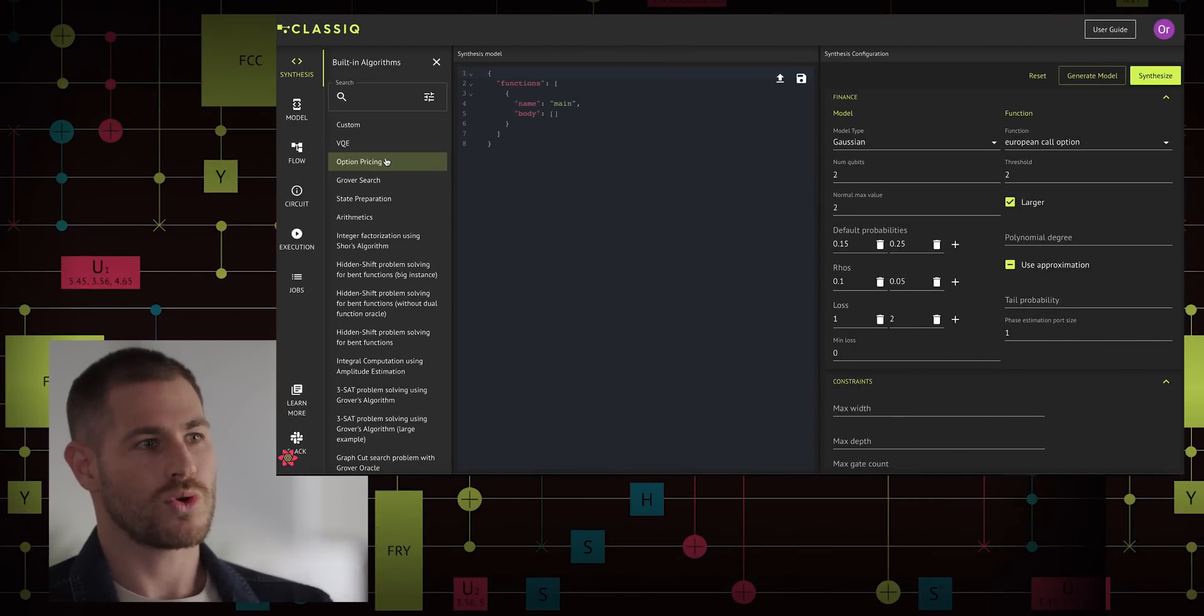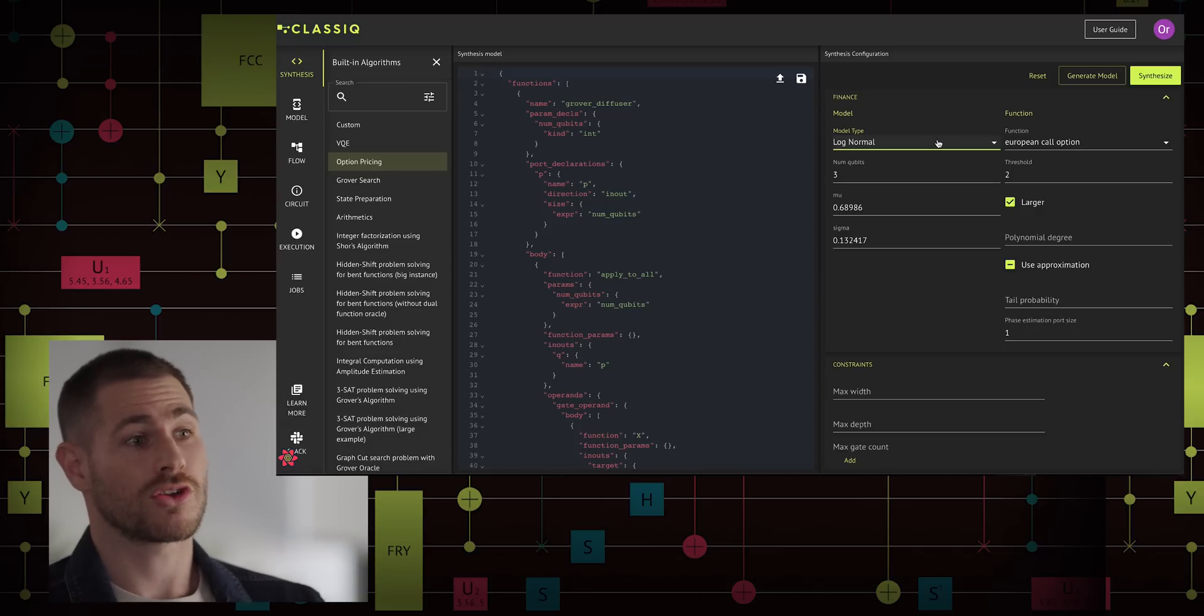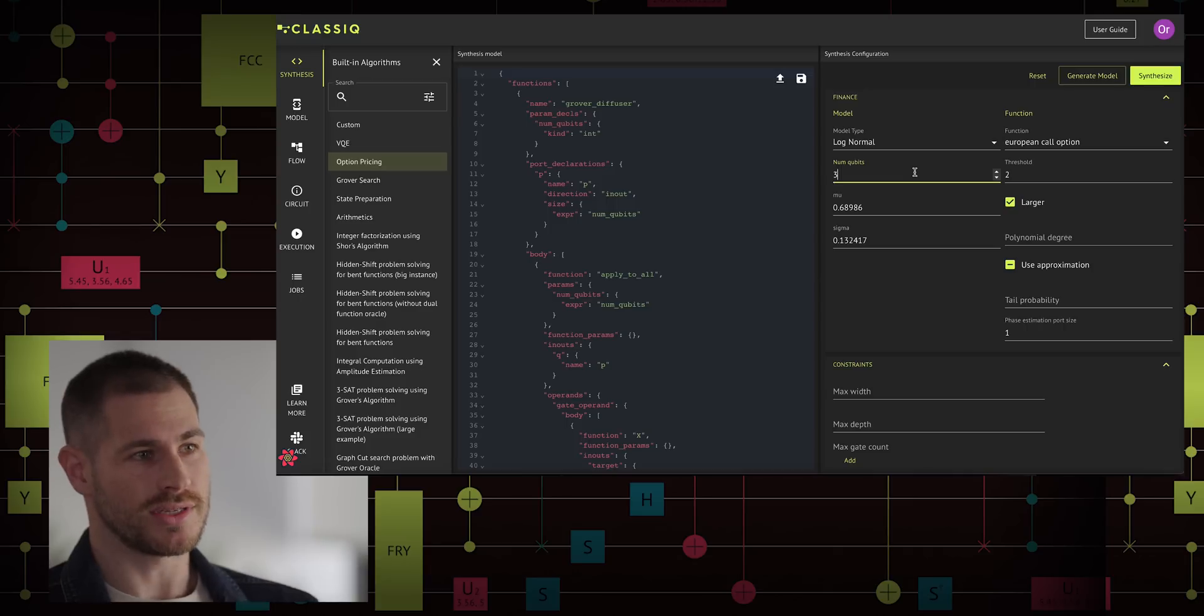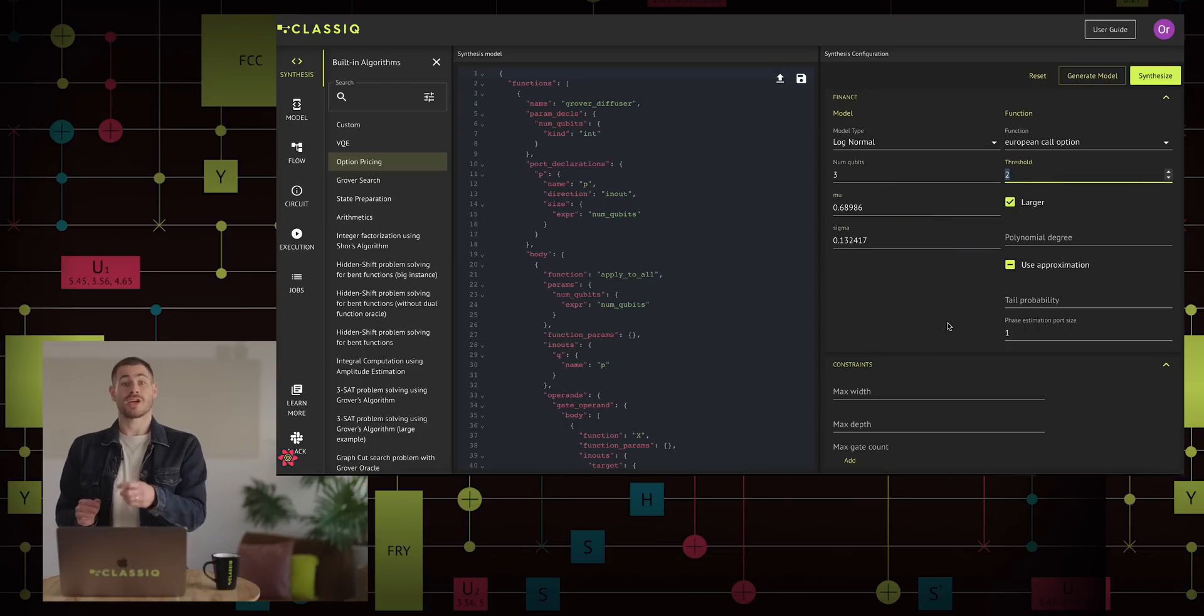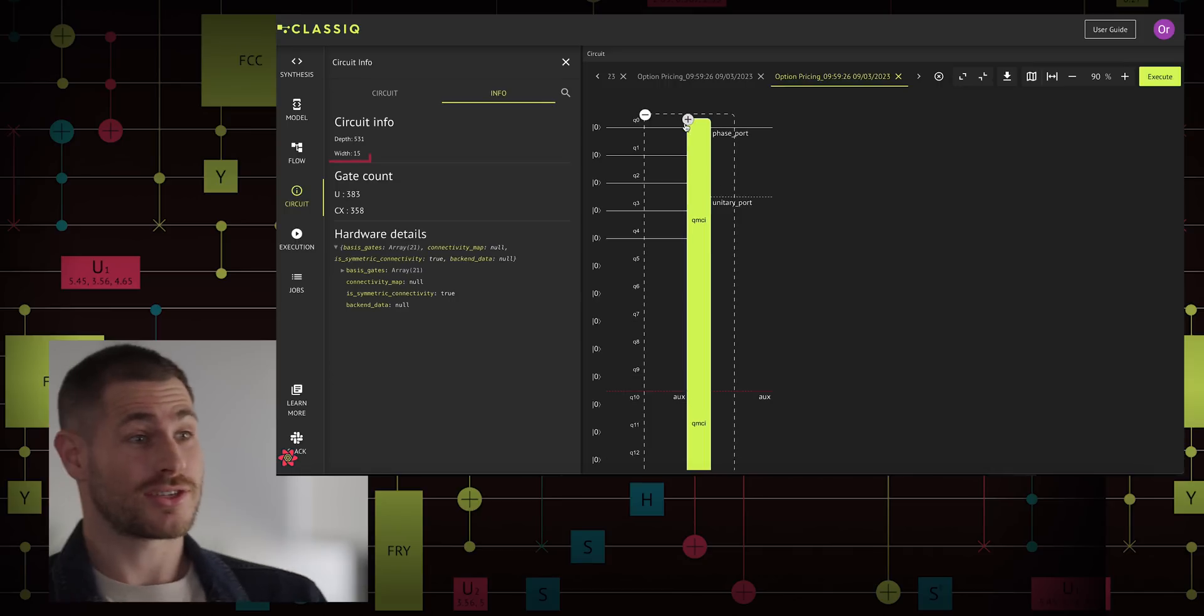Let's get started and see how to estimate these options with Classiq. From the synthesis page of the platform, we choose the option pricing example. On the right, we have the panel where we can configure our problem. First, we choose the log normal distribution for our strike price distribution. The payoff function, which represents the type of the options we are dealing with, is the European call option. The number of qubits is used to discretize the values of the asset. More qubits means better resolution, but for now we will start with 3 qubits. The threshold means the strike price. Now we first need to generate the model in order to apply all our changes, and then we synthesize our model to receive the quantum circuit. This is the circuit we have received. It uses 15 qubits and its depth is 531.